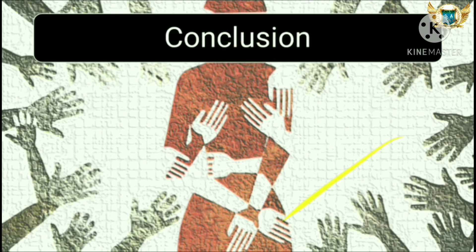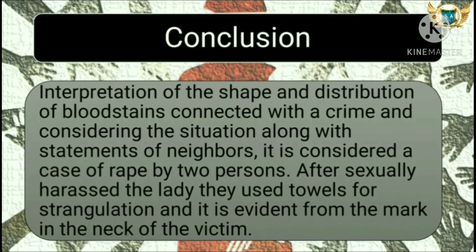Conclusion: Interpretation of the shape and distribution of blood stains, connected with the crime scene and considering the neighbor's statements, confirms this was a case of rape by two persons. After sexually harassing the lady, they used the towel for strangulation, which is evident from the marks on the neck of the victim.